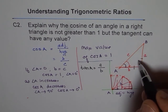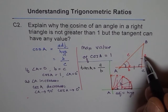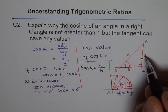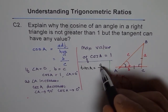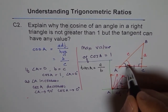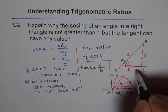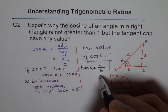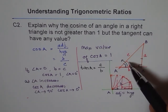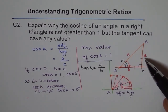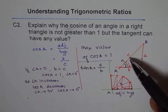The ratio of a over b can be any value — a could be bigger or smaller than b with no restriction. If a approaches 0, then tan A approaches 0. But if b approaches 0, meaning the angle is increasing toward 90 degrees and b is shrinking, then tan A approaches infinity. Therefore, tangent can have any value.